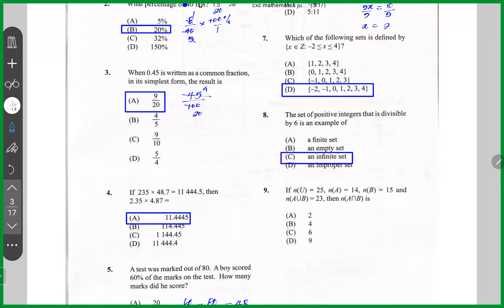This says, The number of elements in universal set U is 25. The number of elements in A is 14. The number of elements in B is 15. The number of elements in A union B is 23. Then the number of elements in A intersect B is